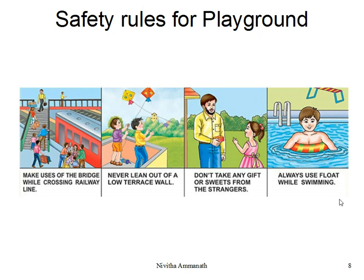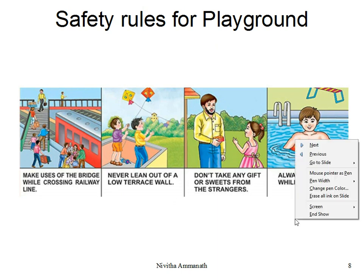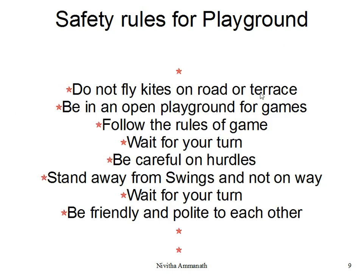Safety rules for the playground: always use a float while swimming. Do not take anything from strangers. Never lean out over a terrace wall. Do not fly kites on the road or terrace — use them only in the open playground. Use the bridge while crossing the railway line. Follow the rules of the game, wait for your turn, and be careful on hurdles. Stand away from swings and not in their path. Be friendly and polite to each other, and do not fight with other children.